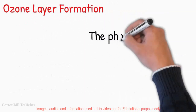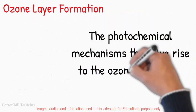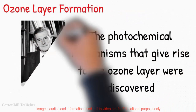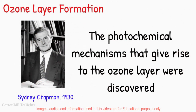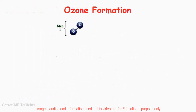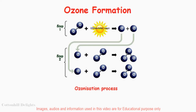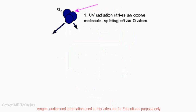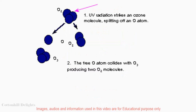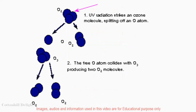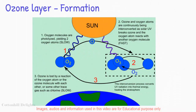Ozone layer formation. The photochemical mechanisms that give rise to the ozone layer were discovered by the British physicist Sydney Chapman in 1930. Ozone in the Earth's stratosphere is created by ultraviolet light striking ordinary oxygen molecules containing two oxygen atoms, splitting them into individual oxygen atoms. The atomic oxygen then combines with unbroken O2 to create ozone, O3. Although it is long lived in the stratosphere, the ozone molecule is unstable, and when ultraviolet light hits ozone it splits into a molecule of O2 and an individual atom of oxygen. This is a continuing process called the ozone-oxygen cycle.